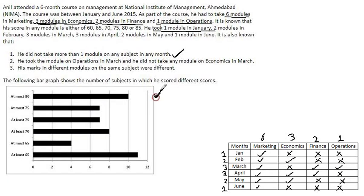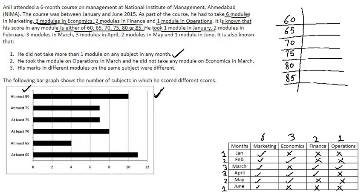Now the bar graph is given. Let's find the values. It is known that the score in any module is either 60, 65, 70, 75, 80, or 85. From the bar graph, there are 10 subjects in which the score is at most 80. The total number of subjects is 6 + 3 + 2 + 1 = 12. So out of 12 subjects, in 10 subjects he scored 80 or less. This means for 85 there should be 2 subjects.